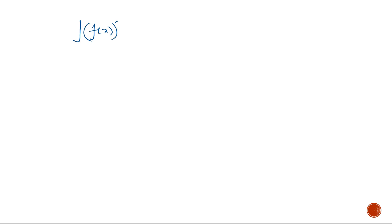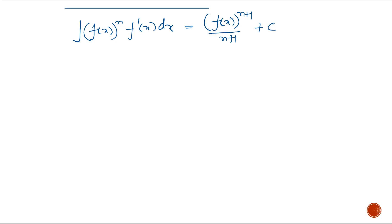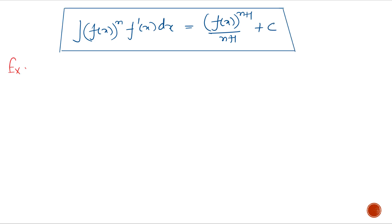Whenever we have a function raised to the power n multiplied by its first derivative, the answer is always the function to the power n+1 divided by (n+1) plus c. In this kind of problem we always put f(x) = t, or we can use this formula straight away.